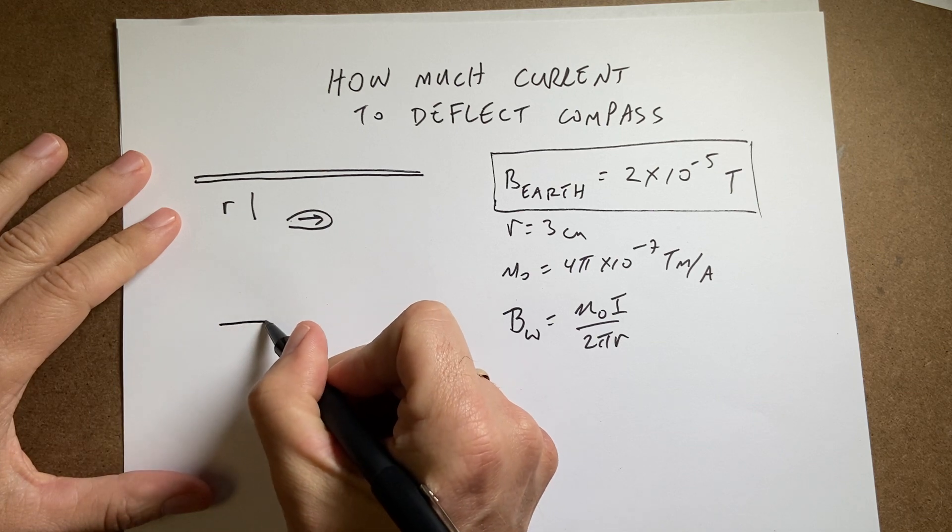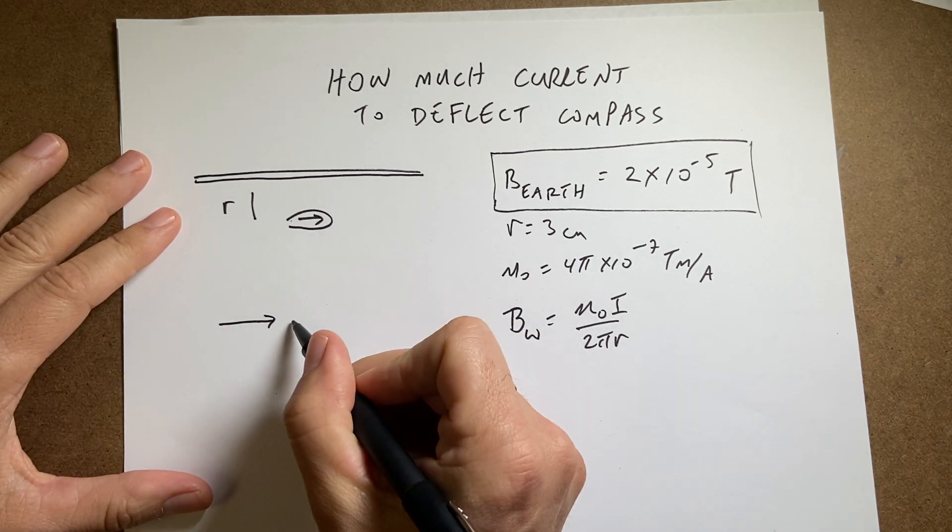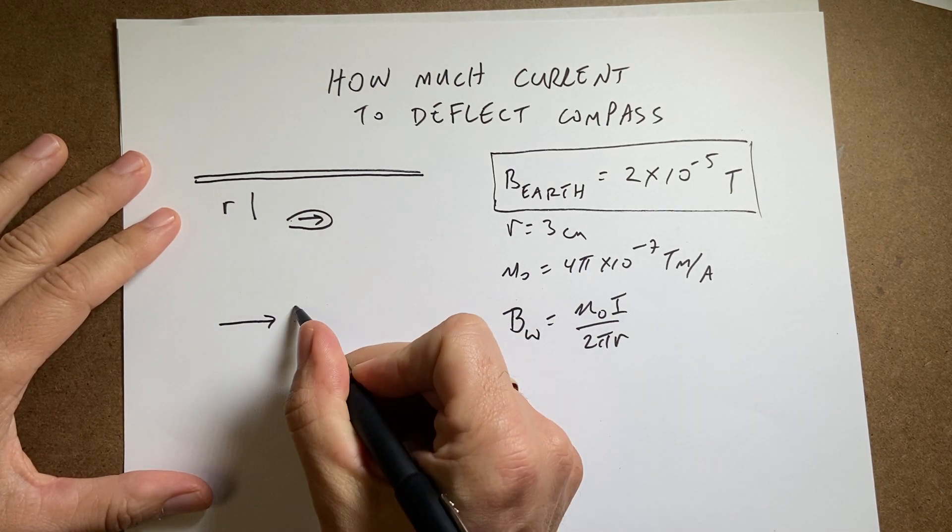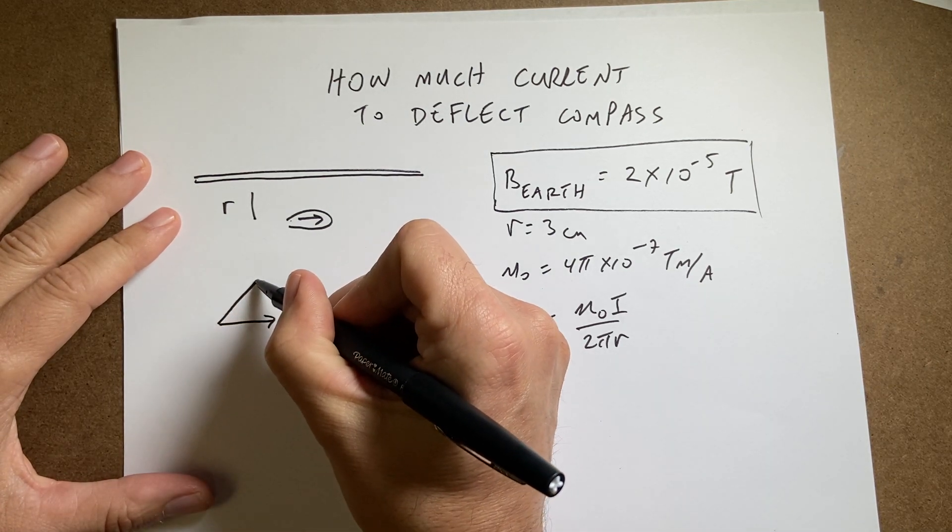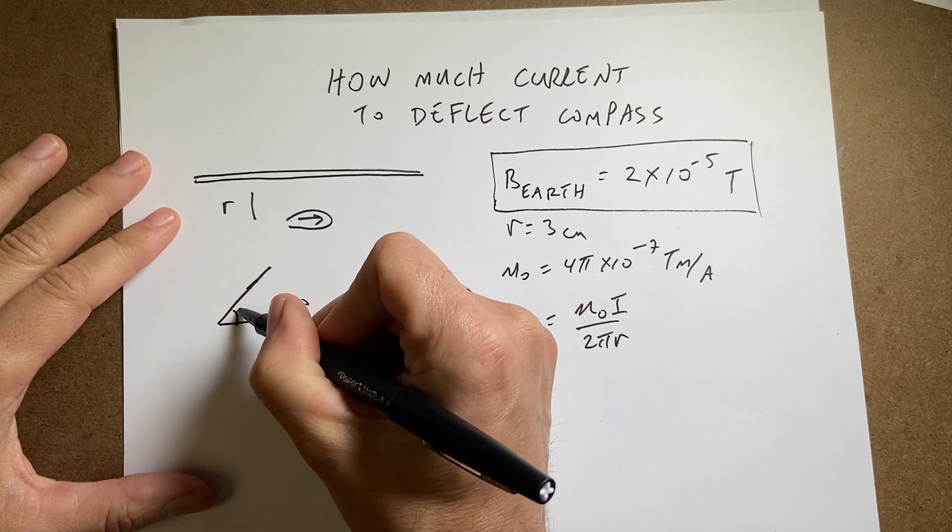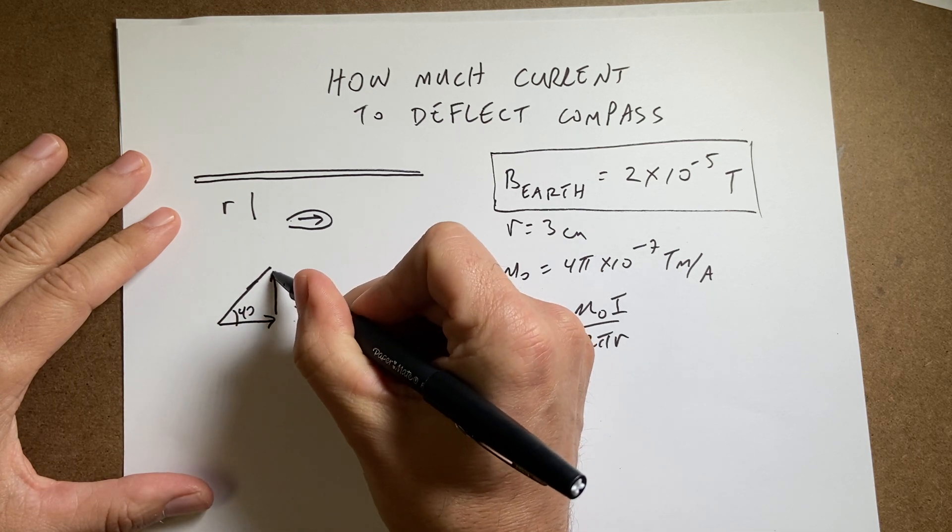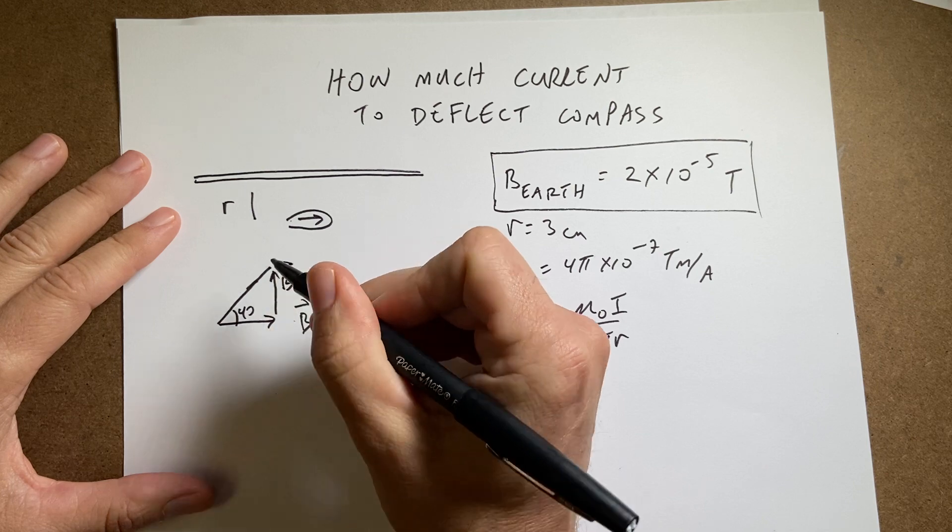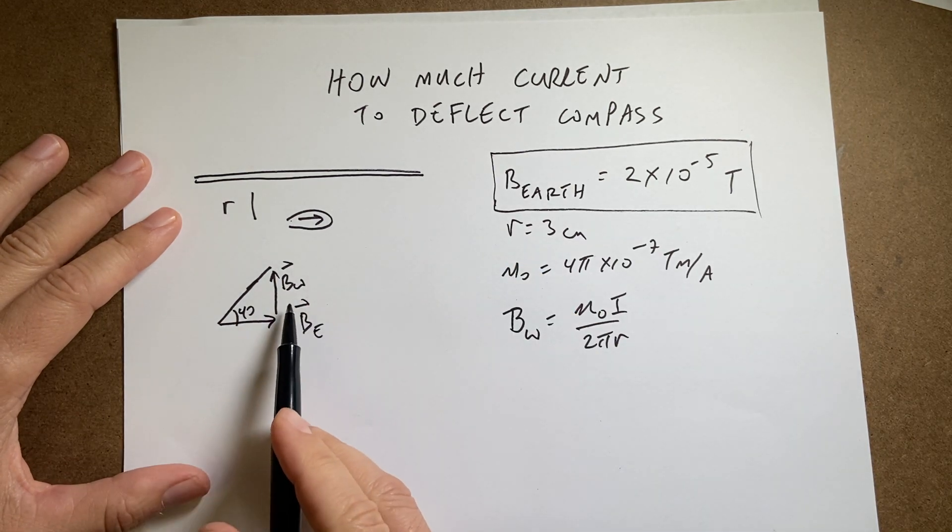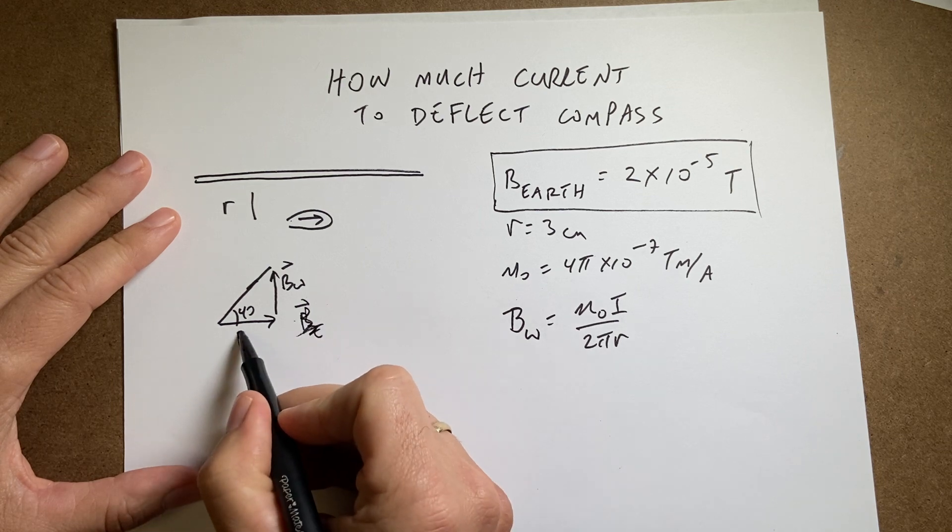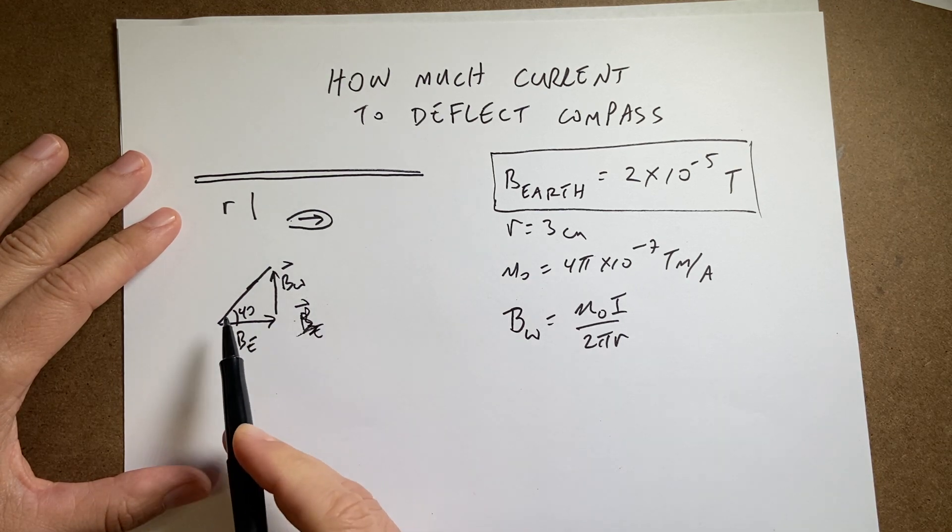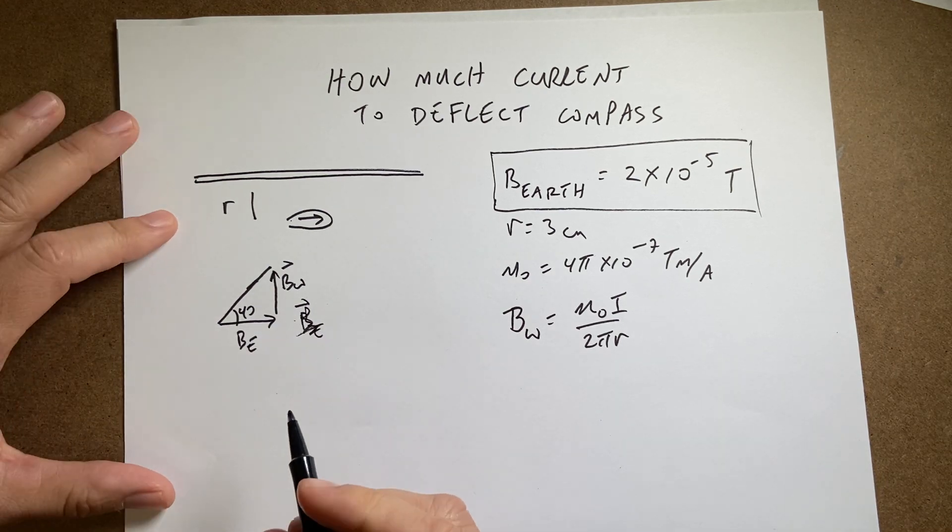So, here is north and there is my B due to the earth. It's a vector. And I want the deflection to be 40 degrees with this as B wire. So, if I know the magnitude of B earth, I'm sorry, this is B earth, and that's B wire, and I know the angle 40 degrees, then I can say the following.